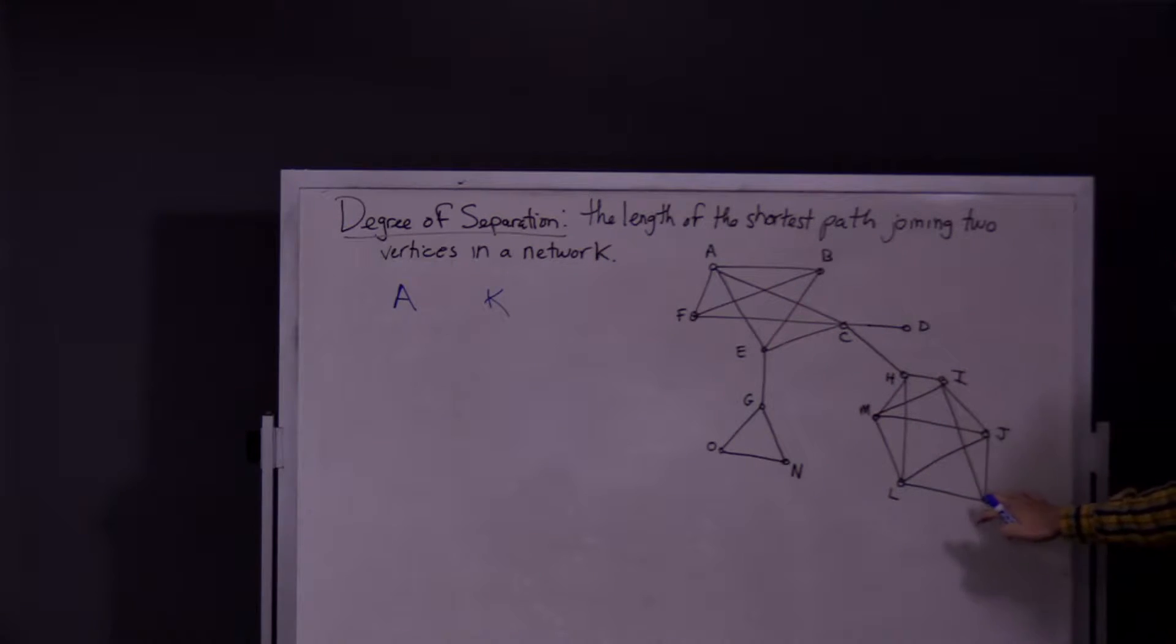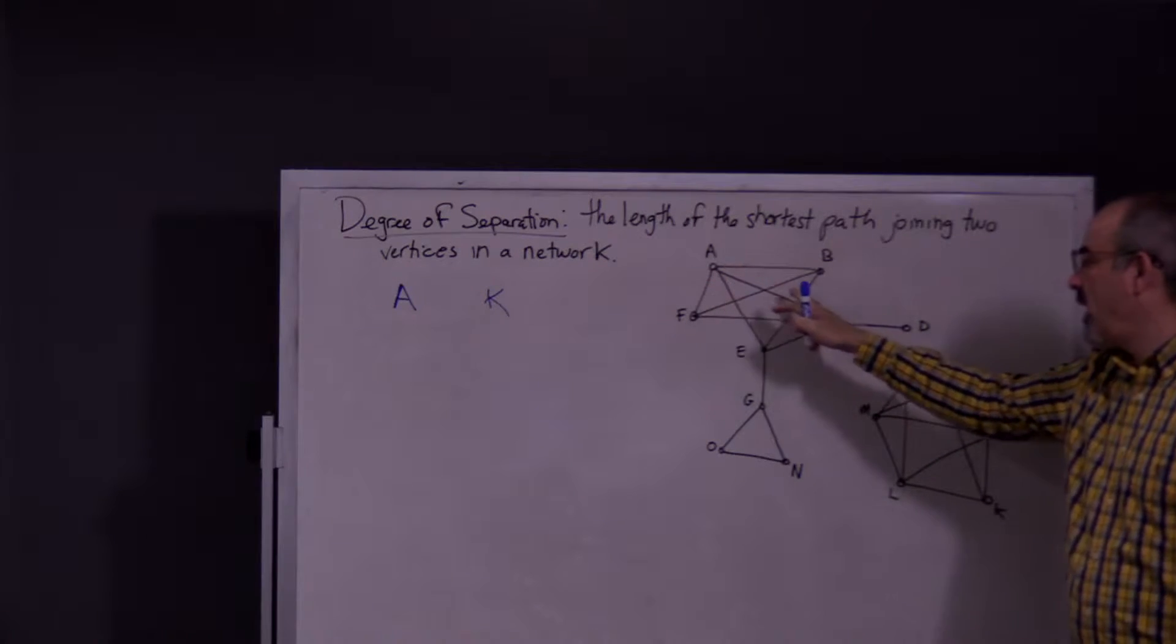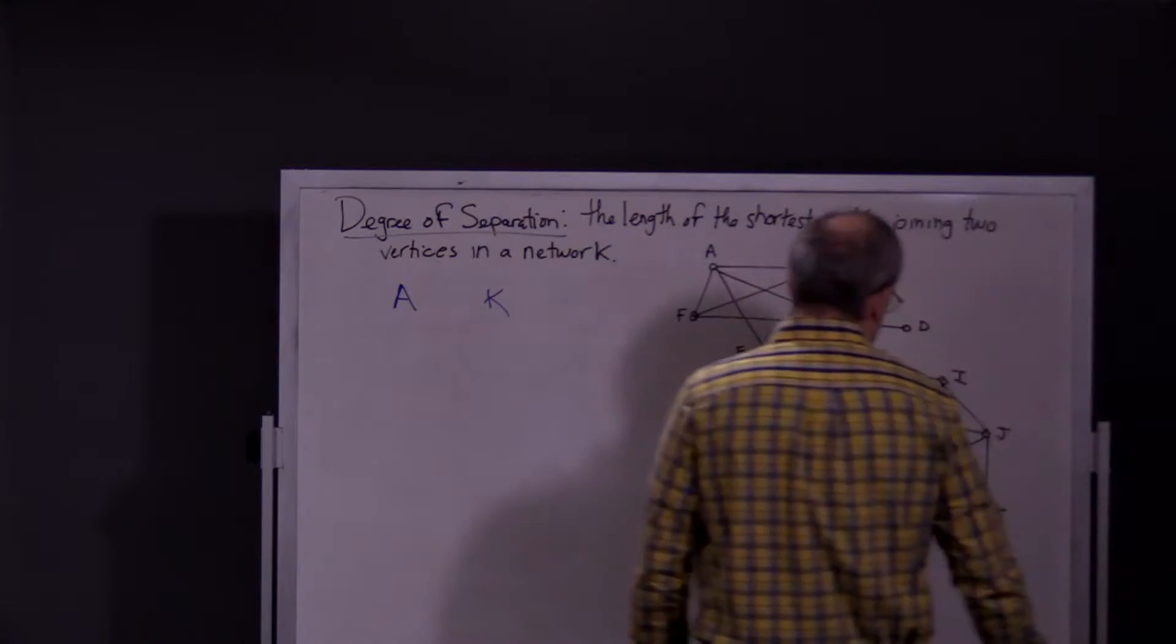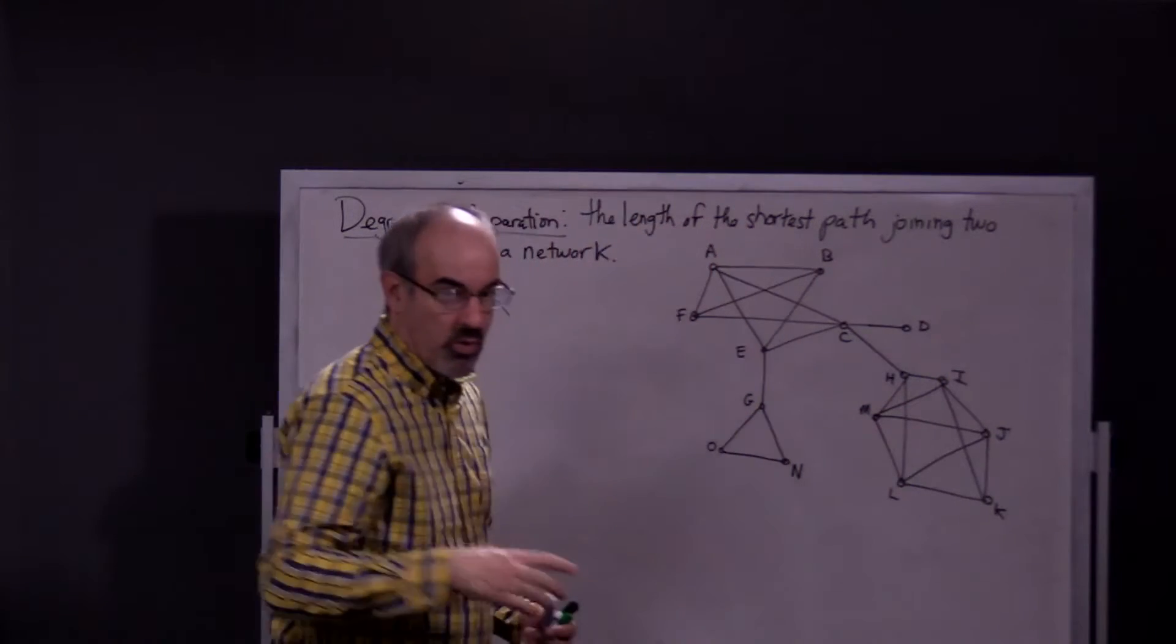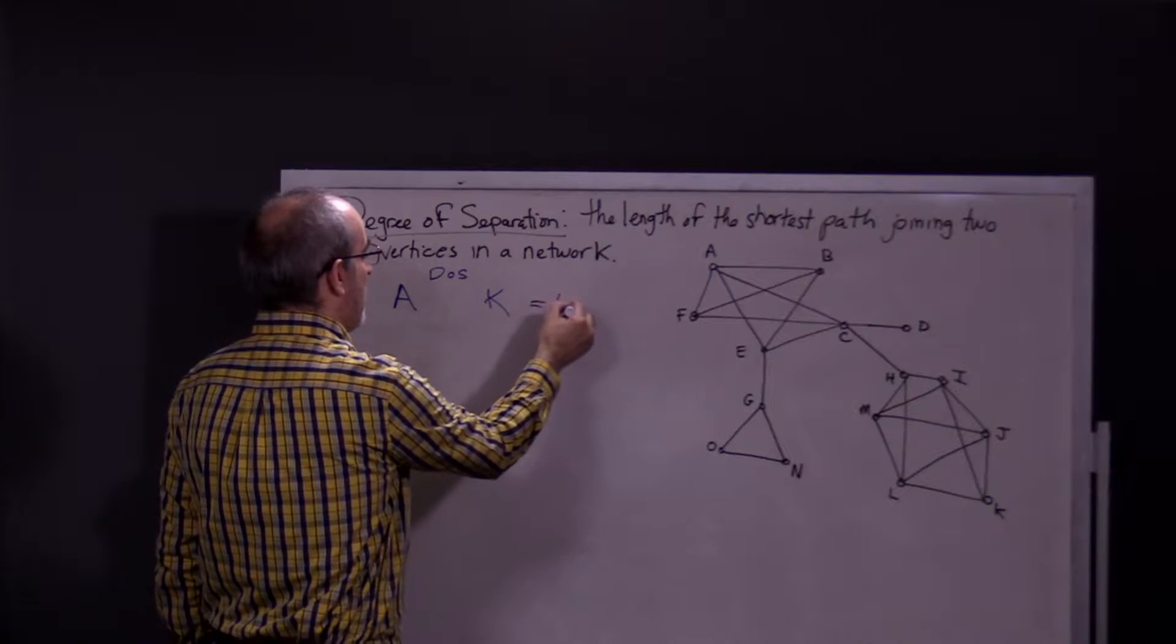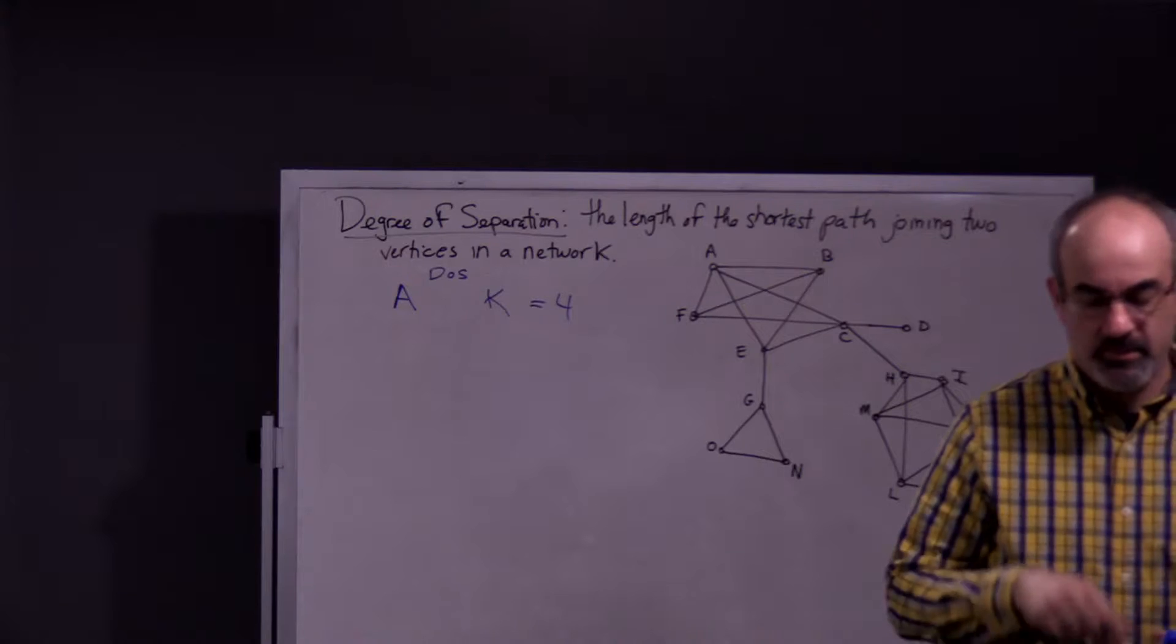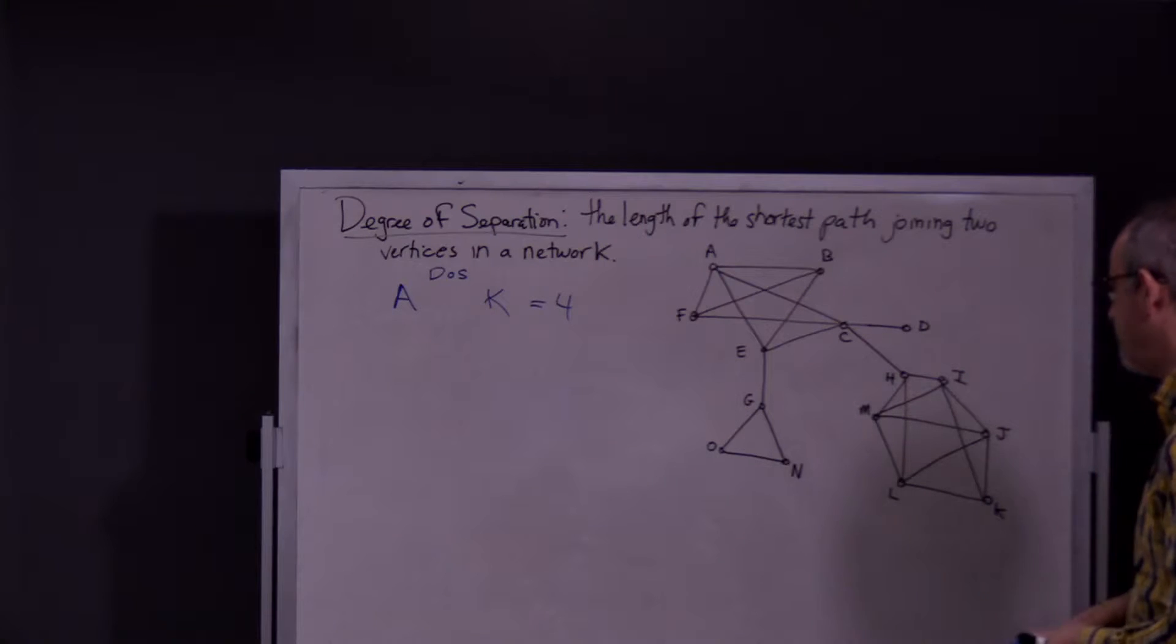So, to get to K, the shortest route is going to go through H. So, A to C, C to H. Now, I just have to figure out the quickest route from H to K. And it looks like it would just be to go to I and then to K. So, we just found, we're looking for degree of separation between A and K, and I found a path that had length four. Now, if you can find one shorter, then obviously, that would be the degree of separation.